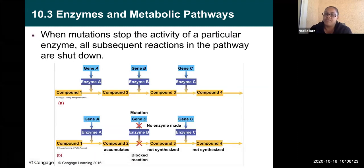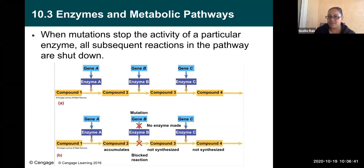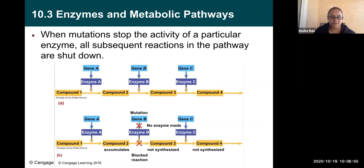When mutations stop the activity of a particular enzyme, all subsequent reactions in the pathway are shut down. In the normal pathway, gene A makes enzyme A which converts compound one to compound two, gene B makes enzyme B which converts compound two to compound three, and gene C makes enzyme C which converts compound three to compound four. But if there's a mutation in gene B, enzyme B doesn't get made, compound two doesn't convert to compound three, and nothing happens after that point — and compounds three and four could be really important.